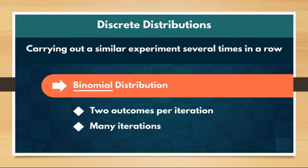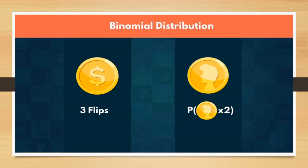If we carry out the same experiment several times in a row, then we have a binomial distribution, which is the third distribution we will discuss here. Just like Bernoulli, we have two outcomes but many iterations. For example, flipping a coin can result in either heads or tails, but if we flip a coin three times in a row and try to calculate the likelihood of getting heads twice. Just a reminder — we are giving an introduction to all the common distributions, but in the next lecture we will see how to perform actual calculations.